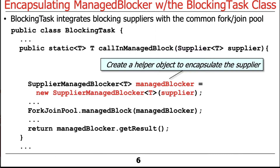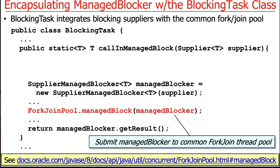What we do here is we create a local variable called managedBlocker of type SupplierManagedBlocker — that's a nested class we'll look at inside BlockingTask. The SupplierManagedBlocker is used to encapsulate the supplier parameter. We make one of those, and then we call ForkJoinPool.managedBlock, passing in that managedBlocker.